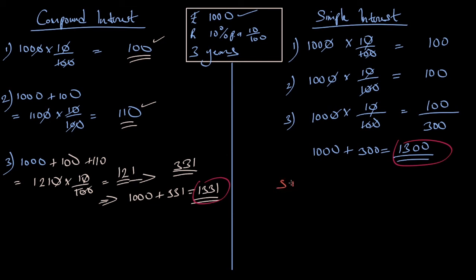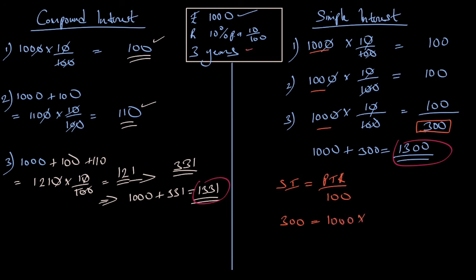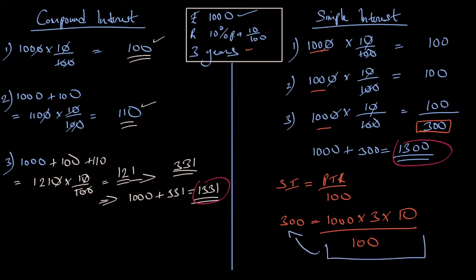Simple interest is called PTR by 100, this is SI. P is the principal. T is 3 years, R is 10 by 100. SI is equal to PTR by 100, so A is equal to PTR by 100.